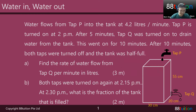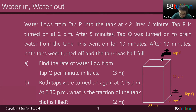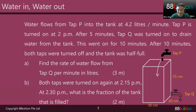Check this out. Water flows from tap P into the tank at 4.2 liters per minute — that means water is going in, drip drip drip, at 4.2 liters every 1 minute. So in 1 minute, 4.2 liters of water goes into the tank.